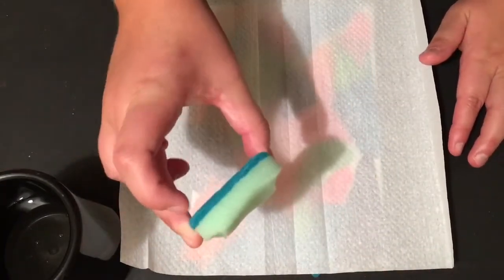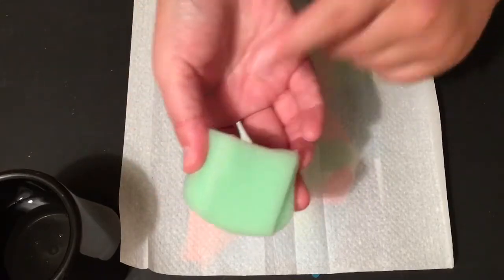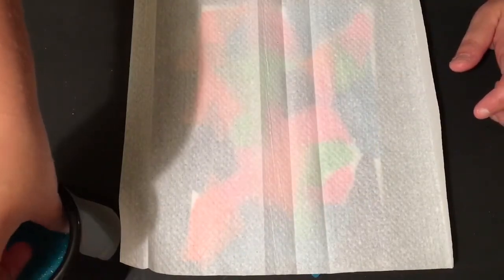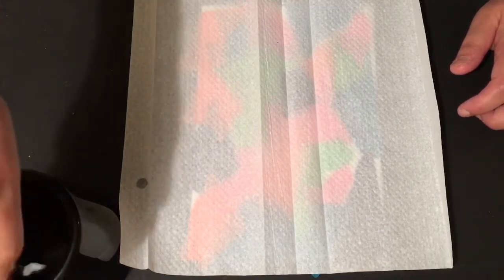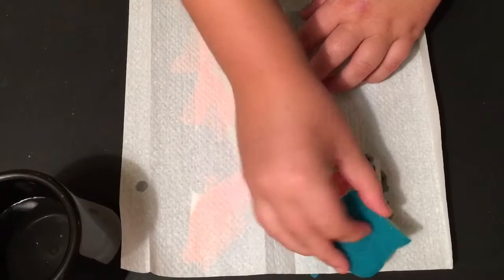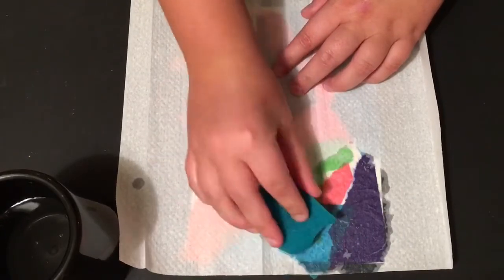So what you are going to do now is take your sponge, not the rough side, the soft side, and dip it into the water. You want to get rid of some of that excess water. You don't need a lot. And you are going to start dabbing it onto the paper towel.